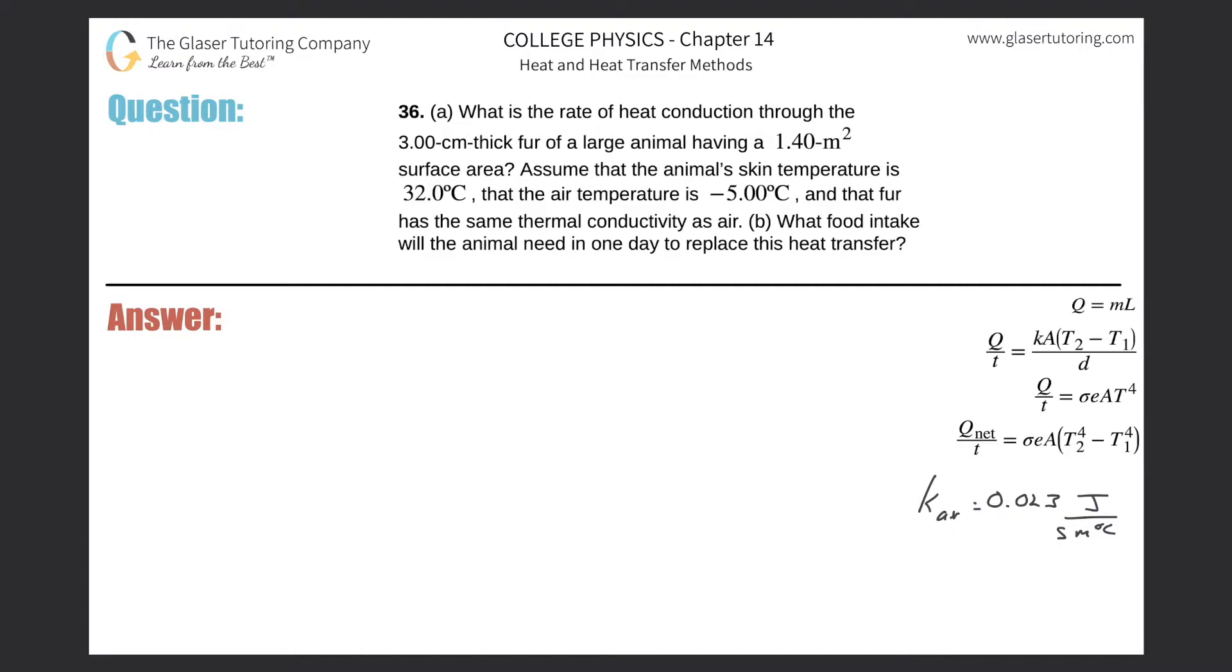Number 36, letter A. What is the rate of heat conduction through the three centimeter thick fur of a large animal having a 1.4 meter square surface area? Assume the animal skin temperature is 32 degrees Celsius, the air temperature is negative five, and that the fur has the same thermal conductivity as air.